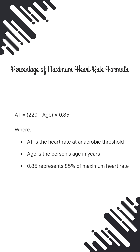First, the percentage of max heart rate formula: take 220, subtract the patient's age, then multiply by 0.85. It's a rough estimate of when the body starts producing lactic acid.